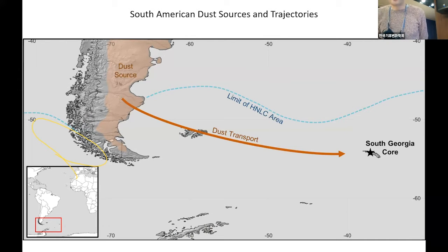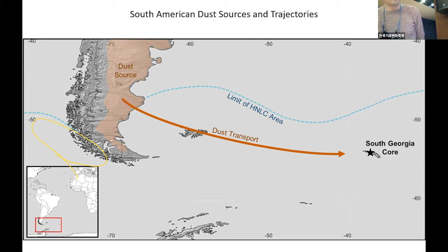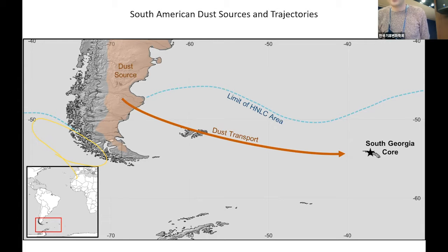This diagram shows in more detail the dust source in Patagonia and the northerly limit of the high-nutrient low-chlorophyll area of the Southern Ocean. We traveled to South Georgia, the sub-Antarctic island which is heavily glaciated, in order to retrieve an ice core so we could look at dust deposition and also the ocean primary productivity response.